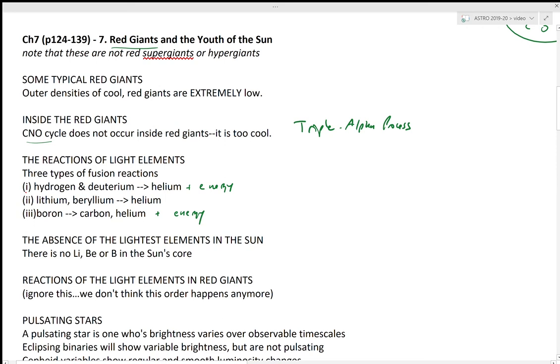But when you fuse lithium and beryllium to form helium and other stuff, you do not create energy. So this is a good indicator of what would be a possible fusion reaction to power the Sun, the one that produces the most energy based on the stuff that we think is there.